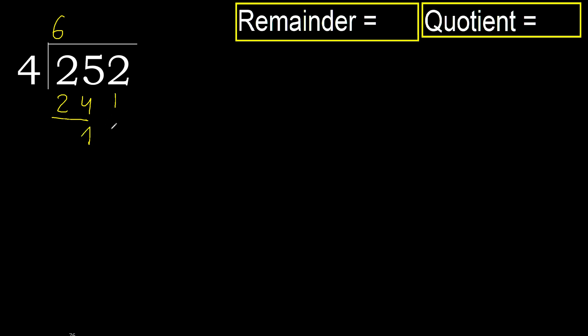Subtract. Next: 12. 4 multiplied by 4 is greater; 4 multiplied by 3 is 12. 12 is not greater.